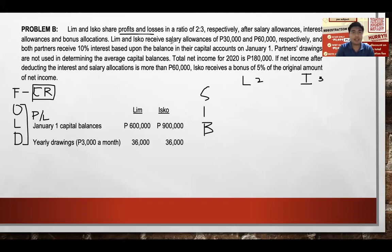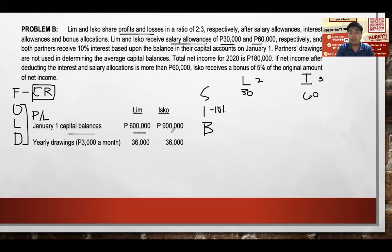Lim's salary is $30,000 and Isco's salary is $60,000. Their capital balances are $600,000 and $900,000 respectively. So interest is 10% of $600,000 equals $60,000 for Lim, and 10% of $900,000 equals $90,000 for Isco.